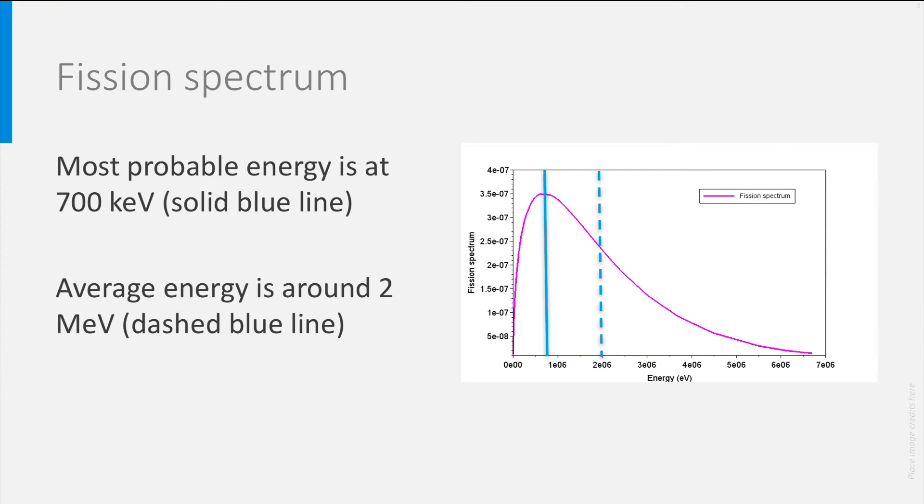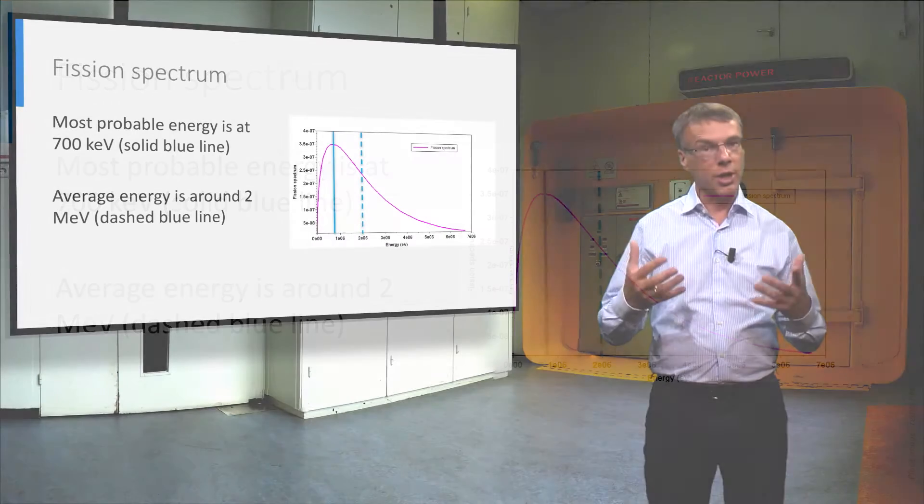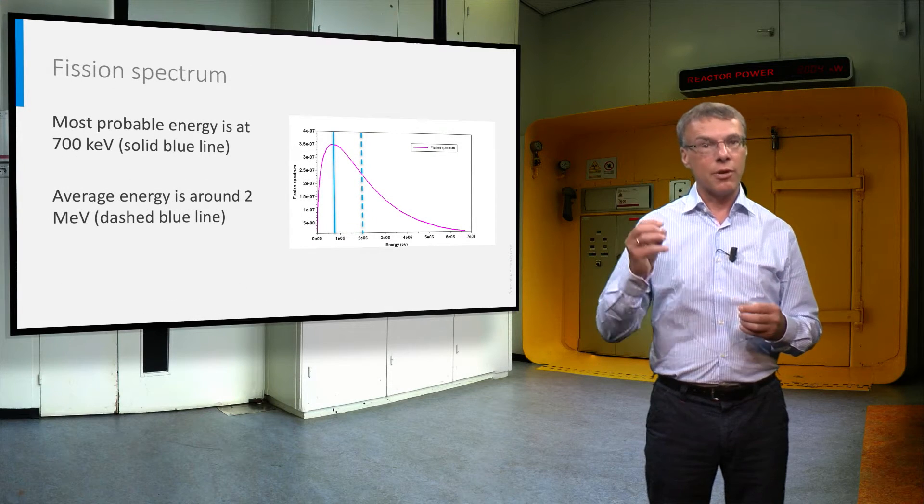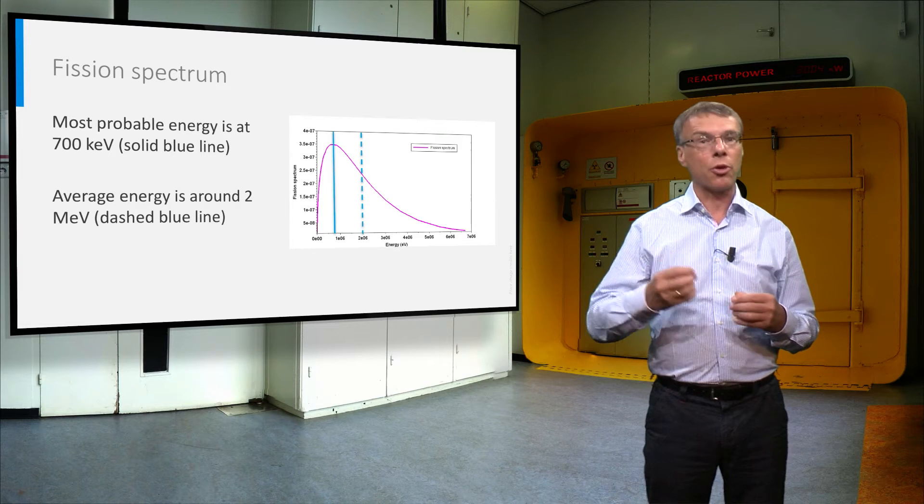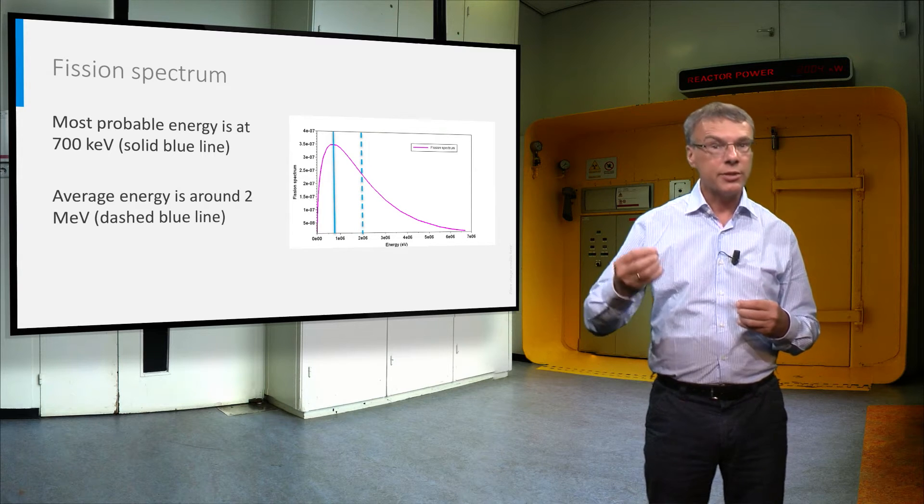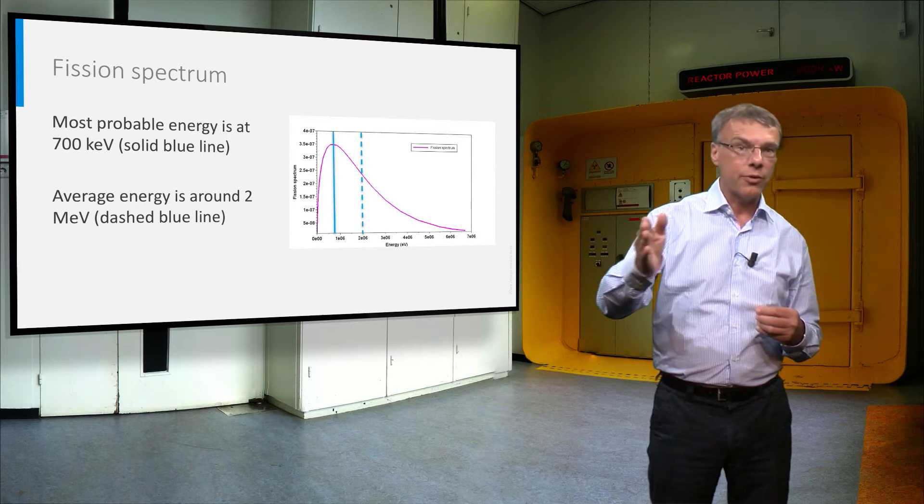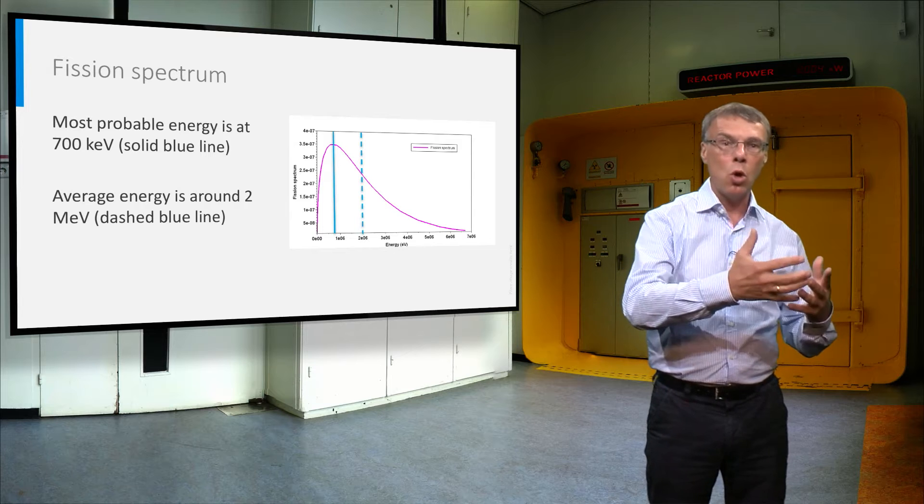Previously you have heard about fissile nuclides, like uranium-235, which have a very high probability to fission when they absorb a thermal neutron. To enhance fission, we have to slow down the fission neutrons to energies below 1 eV.